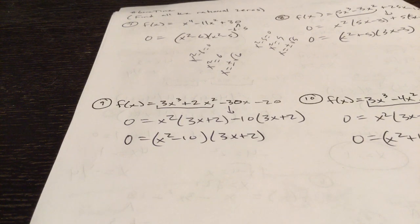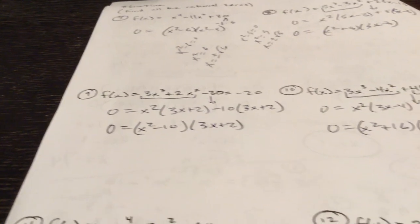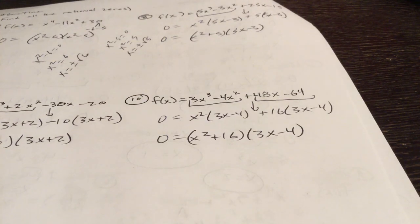Number nine, you're going to factor by grouping. Take a look at what they have in common. Factor out a negative there. Again, you're going to set equal to zero on nine. On ten, you're going to factor by grouping one more time.